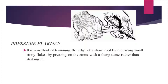The next technique is called pressure flaking. It is a method of trimming the edge of a stone tool by removing small stony flakes by pressing on the stone with a sharp stone, rather than striking it. Until recently, many people including barbers used to sharpen steel blades of knives and shaving blades by rubbing them against a stone — this was done by the pressure flaking method.